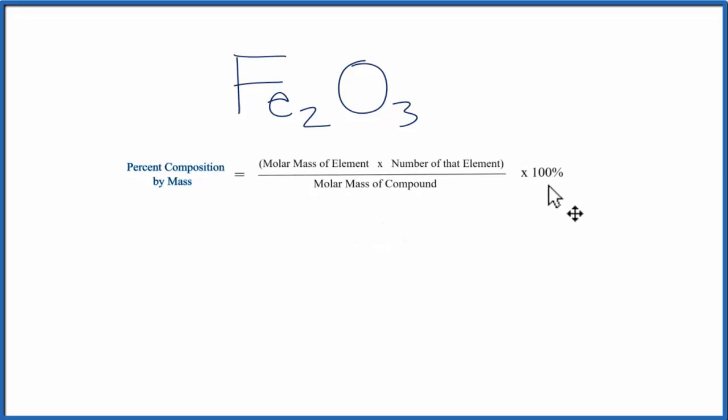When we're finding a percentage, we're just taking a part over the whole object. So here, when we look at the Fe, we're going to take the part, these two Fe atoms here, and figure out what percentage they are of the whole Fe2O3 compound.